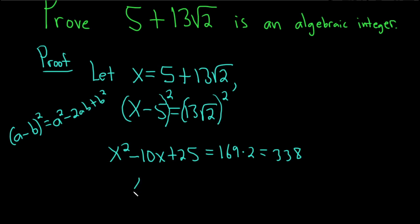Now we can subtract that from both sides. We have x squared minus 10x. And then we have 25 minus 338, which gives us negative 313. So this is a monic polynomial. It's a polynomial with leading coefficient 1 with integral coefficients.